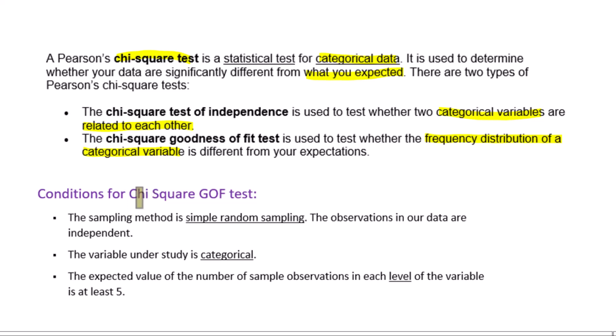Conditions for chi-square GOF test: The sampling method is simple random sampling. The observations in our data are independent. The variable under study is categorical. The expected value of the number of sample observations in each level of the variable is at least five.